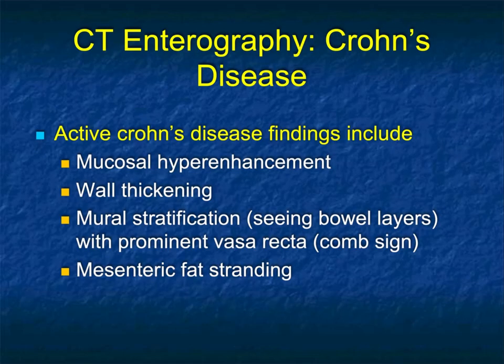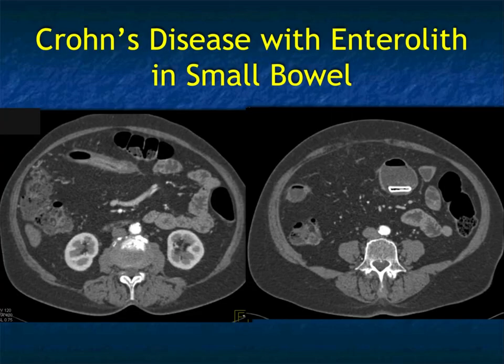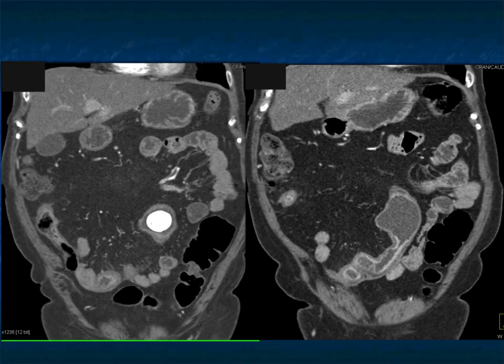Now looking at small bowel, we often do dedicated small bowel studies called CT enterography. In Crohn's disease we look for many things: mucosal hyperenhancement, wall thickening, the comb sign with prominent vasa recta, mesenteric fat stranding, and changes in vessel caliber. Here's a good example of dilated bowel with an enterolith. One of the complications of Crohn's — when you think about small bowel obstruction — is strictures. You can see the enterolith beautifully here with that thickened bowel.